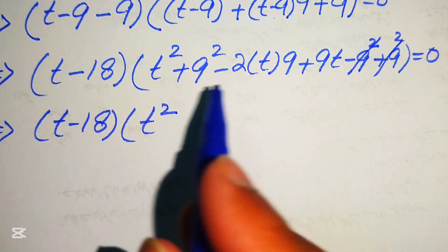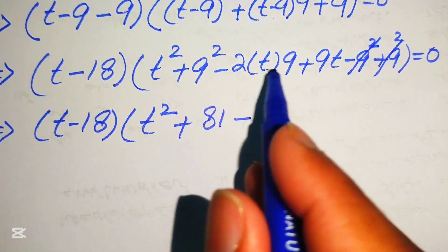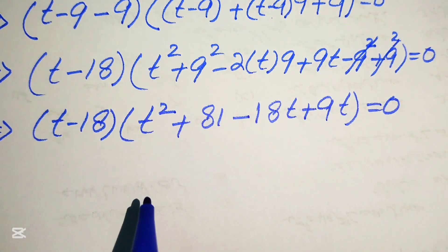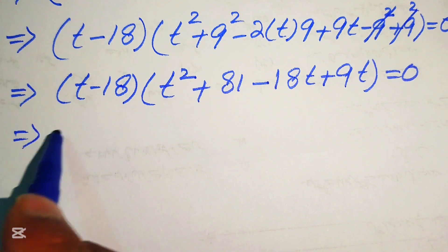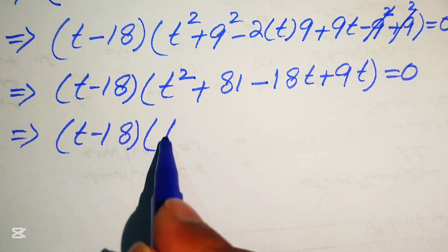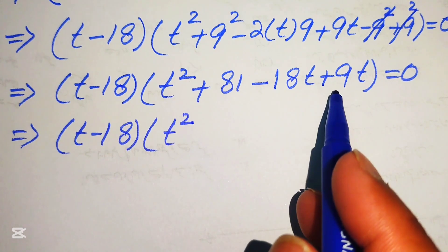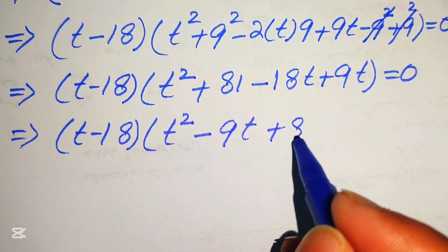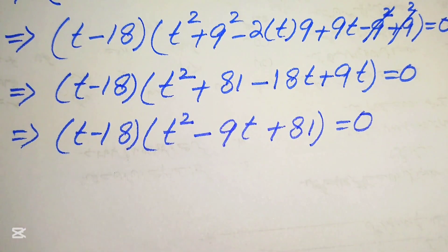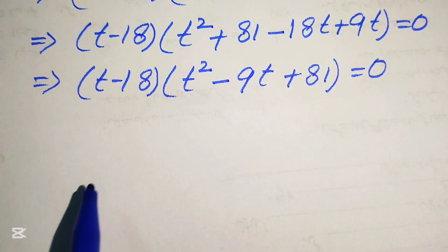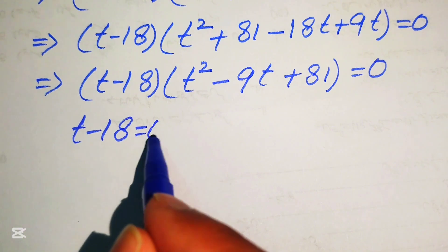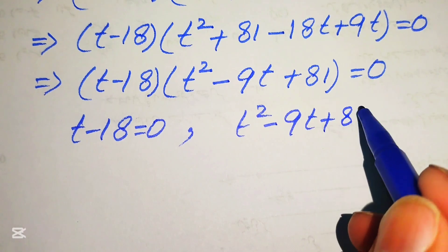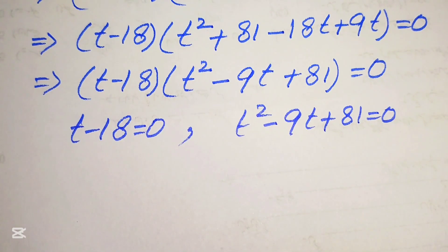The -81 and +81 cancel out, leaving t - 18 times (t² - 18t + 9t) = 0, which simplifies to (t - 18)(t² - 9t + 81) = 0. We divide this into two cases: Case 1 is t - 18 = 0, and Case 2 is t² - 9t + 81 = 0.